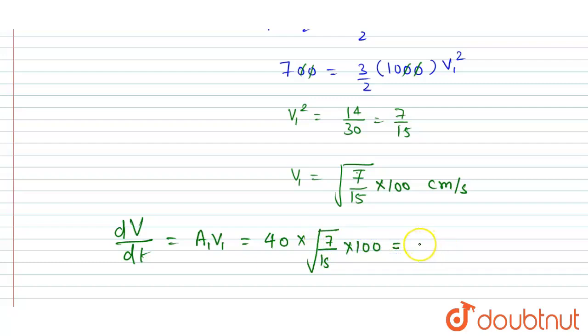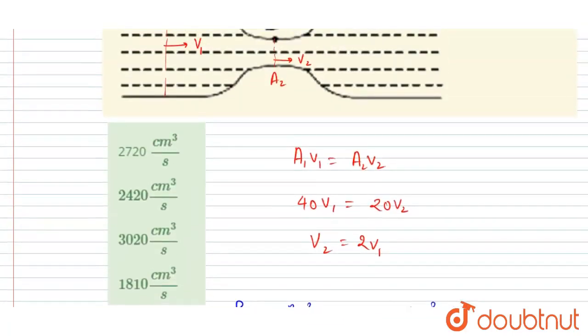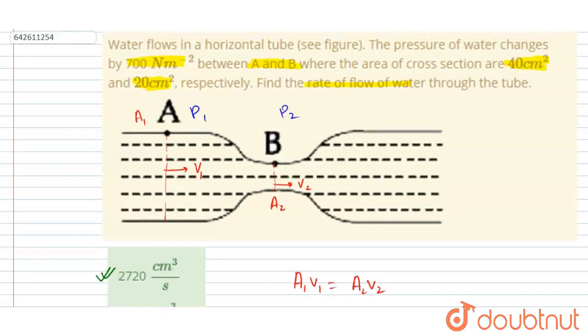So after calculation we will get centimeter cube per second as the answer. So now you can check which option is the correct. So 2720 centimeter cube per second A is the correct option. Thank you.